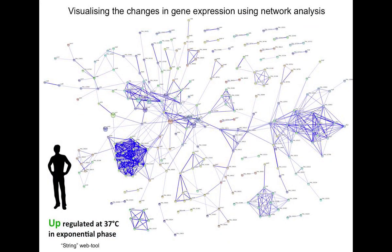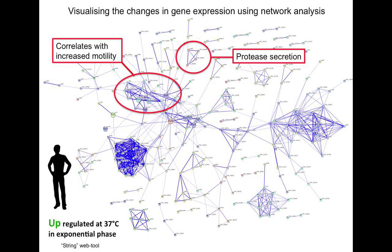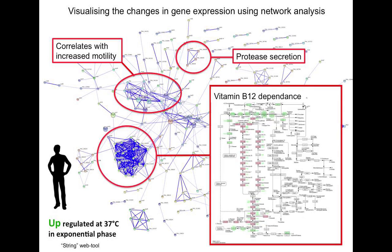Once you've got your gene lists of what's different under the two conditions, it's hard to sift through in Excel tables. You can use a network analysis program called String — you paste in your list of differentially expressed genes, and it plots this kind of crazy, drunken-spider network, which is actually more useful than it looks. You can pick out, for example, that these genes are all to do with secretion of proteases; these genes are all clustered together as motility genes — chemotaxis and flagella expression, so it starts moving when you take the temperature up. And we found, for example, a very strong cluster showing vitamin B12 dependence at higher temperature — cryptic stuff you wouldn't have seen otherwise.